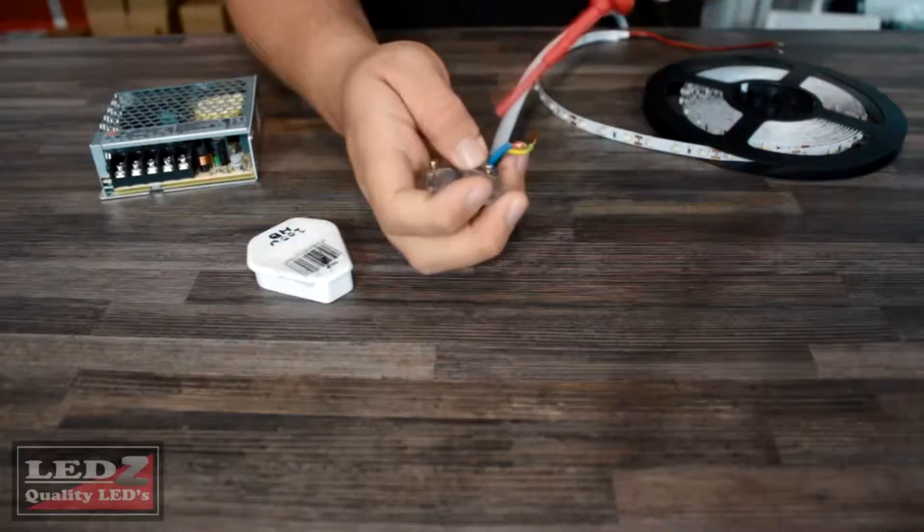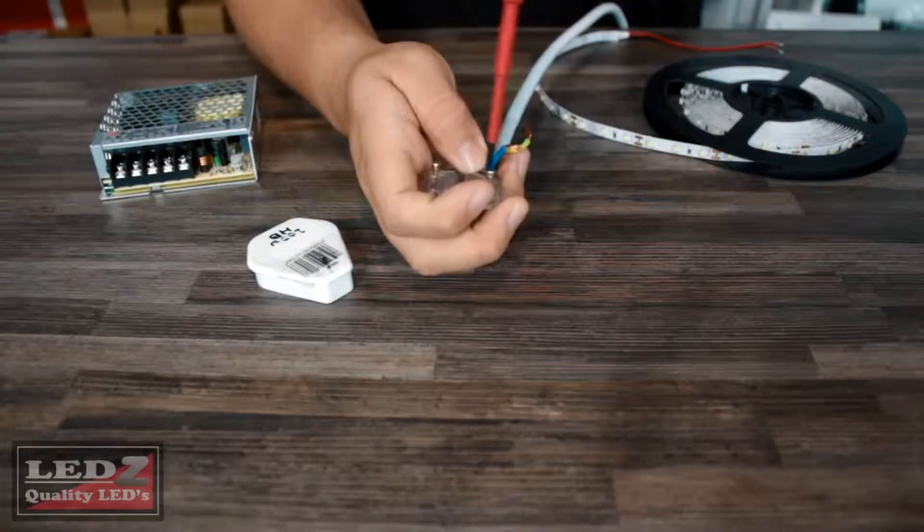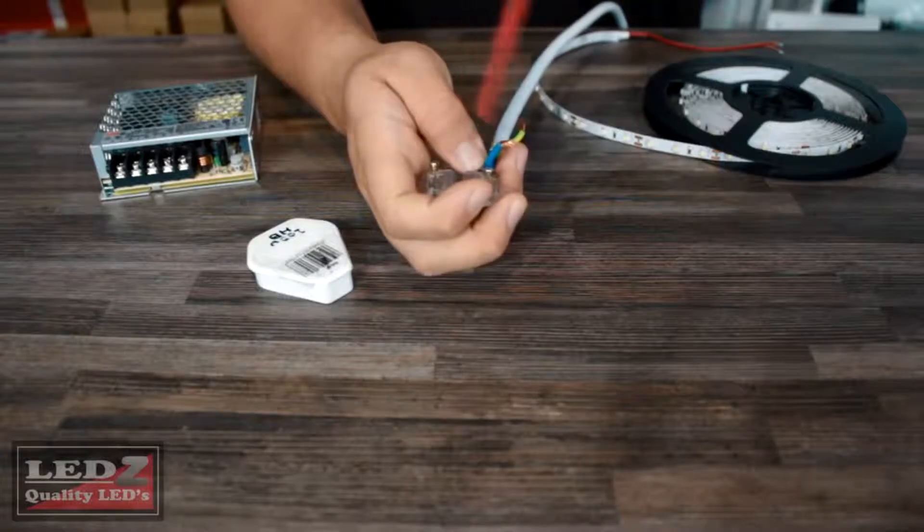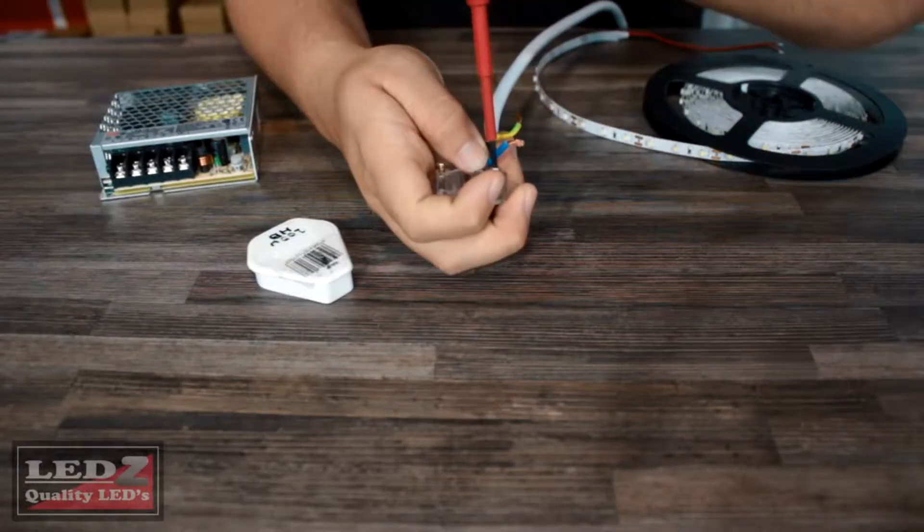Repeat this process that we did with the live cable into the earth and into the neutral. Once you're done with that, close the plug up, replacing the two screws on the back.